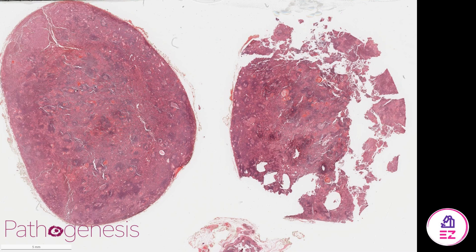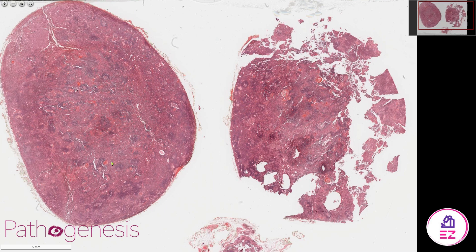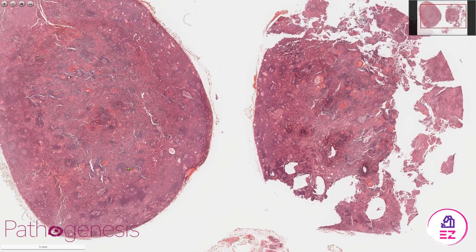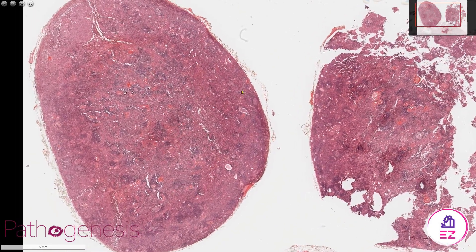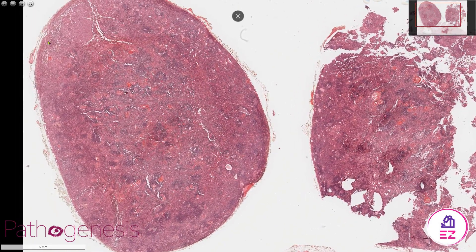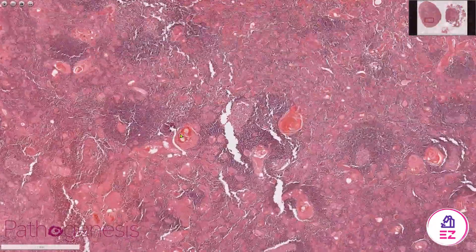Hello and welcome to Path Made Easy. Today's example is a sebaceous lymphadenoma, which is quite a rare tumor with some nice features to help diagnose it. We're going to focus on this slice here, and you can see that in keeping with its benign nature, it's very well circumscribed.